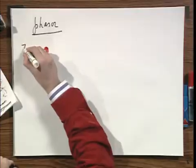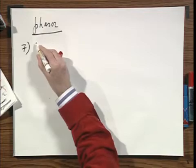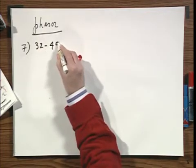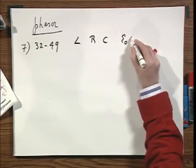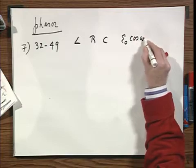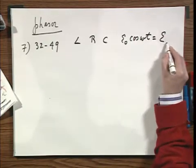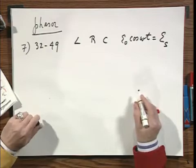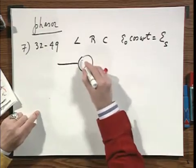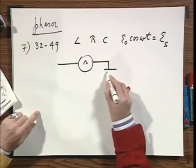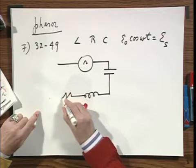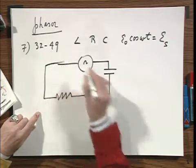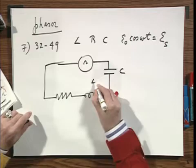I will do one problem in which I will use phasor diagrams. That's my last problem that I will do, number seven, because I will leave you alone with eight. I don't think eight is all that difficult. LRC circuit and we have an alternating voltage source, E zero cosine omega T, and I think it's called E of S. Getting boring, I keep drawing the same circuit: C, L, R.